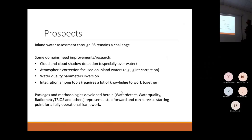Atmospheric corrections focused on inland waters — most importantly glint correction to avoid outliers in our inversions of quality parameters. Quality parameter inversion itself is another area requiring more research.